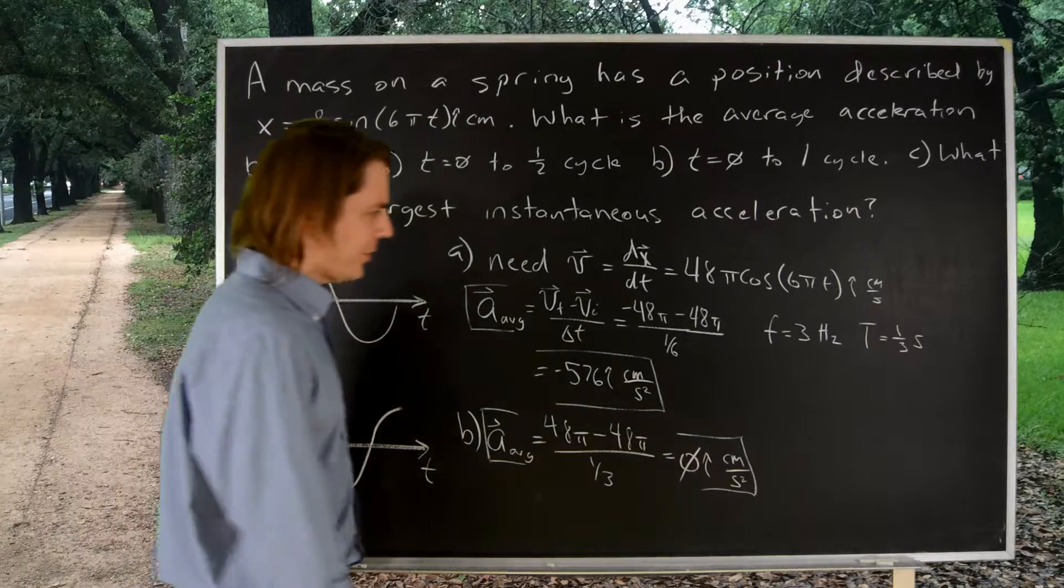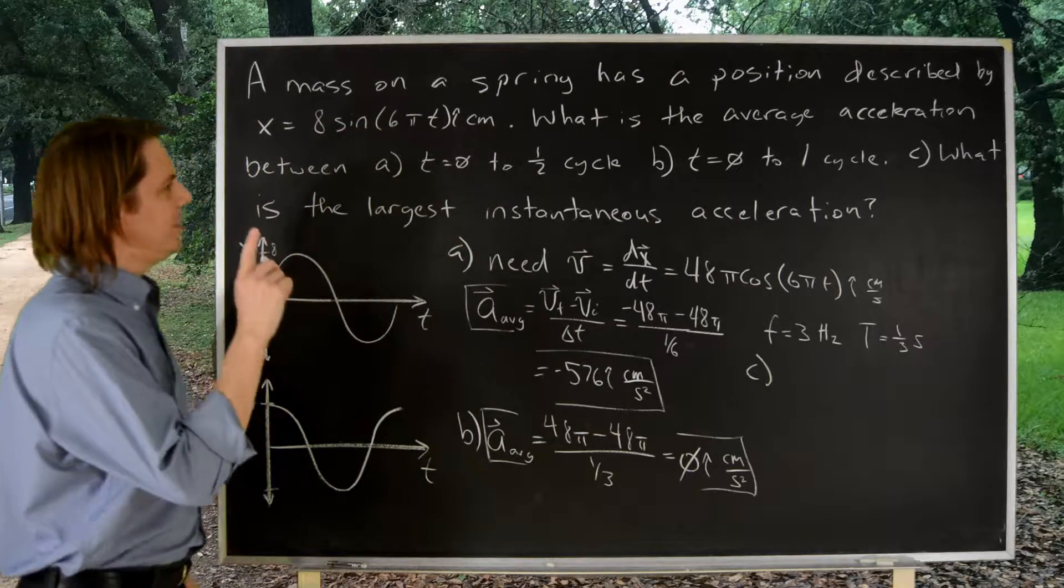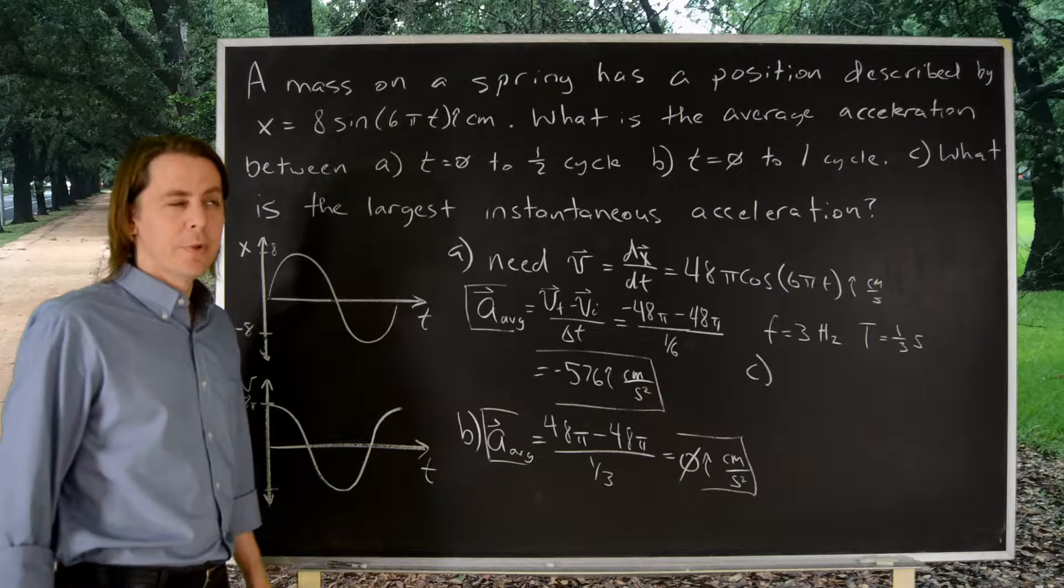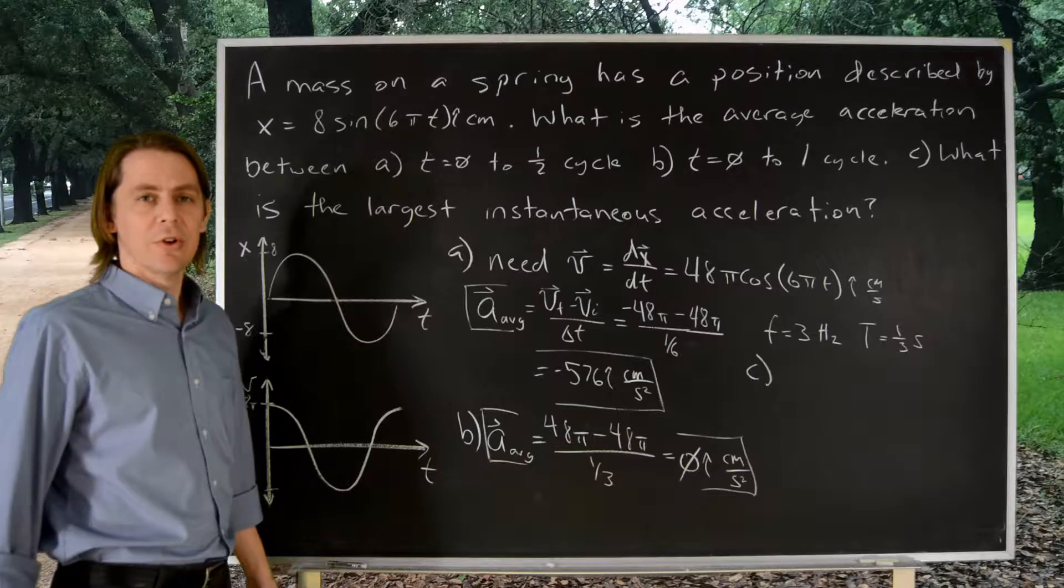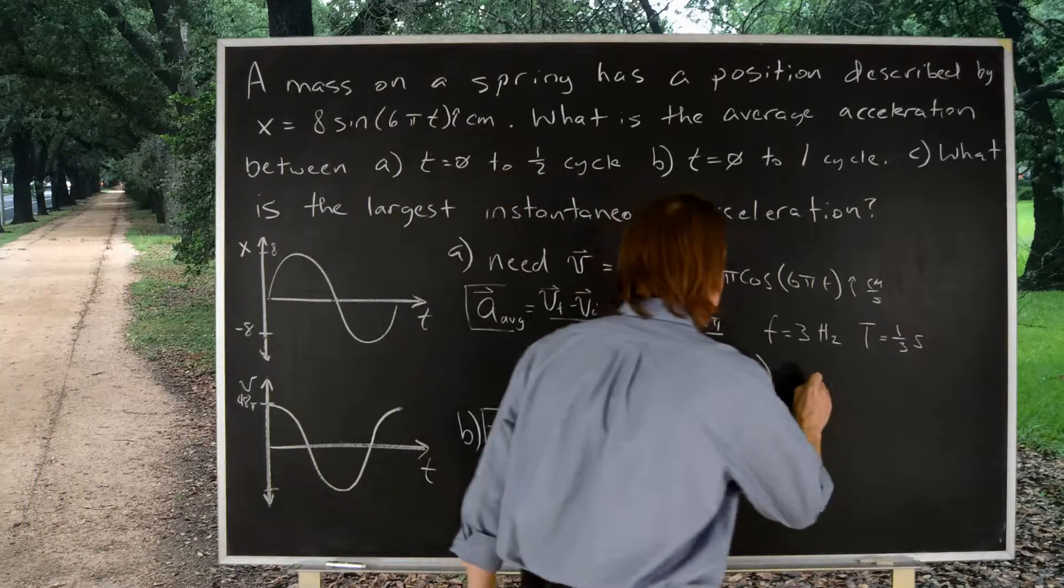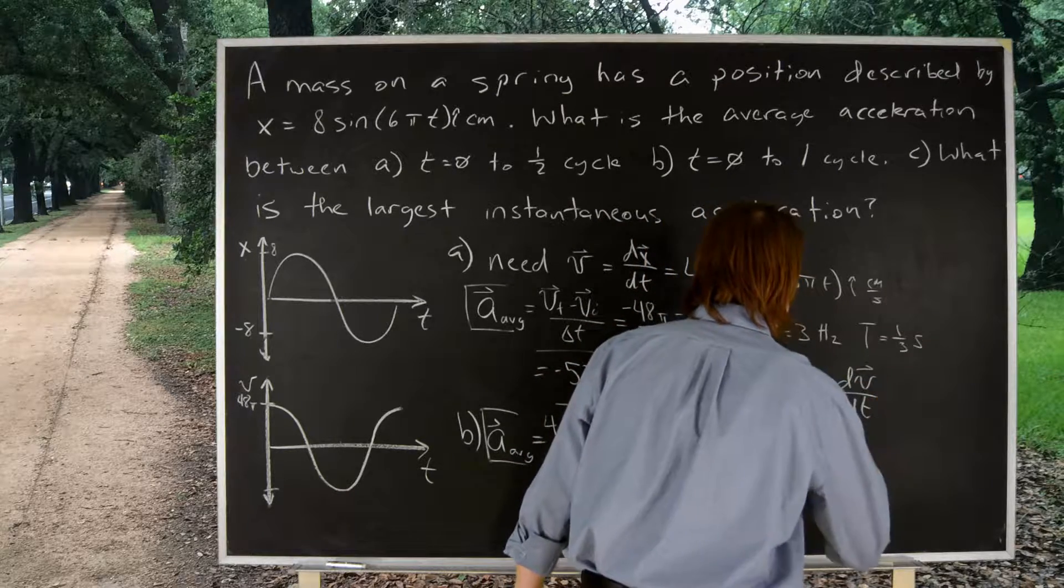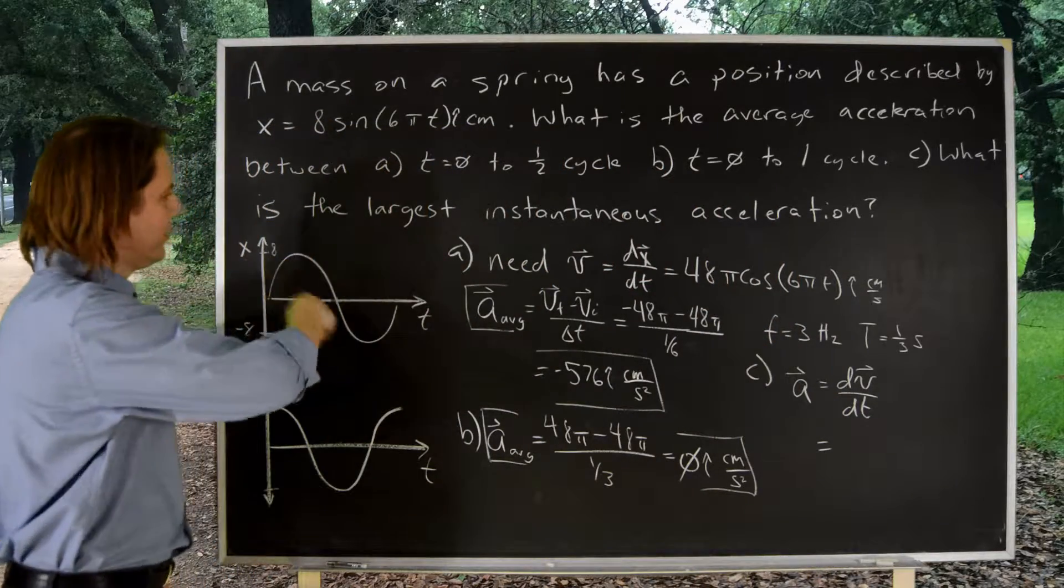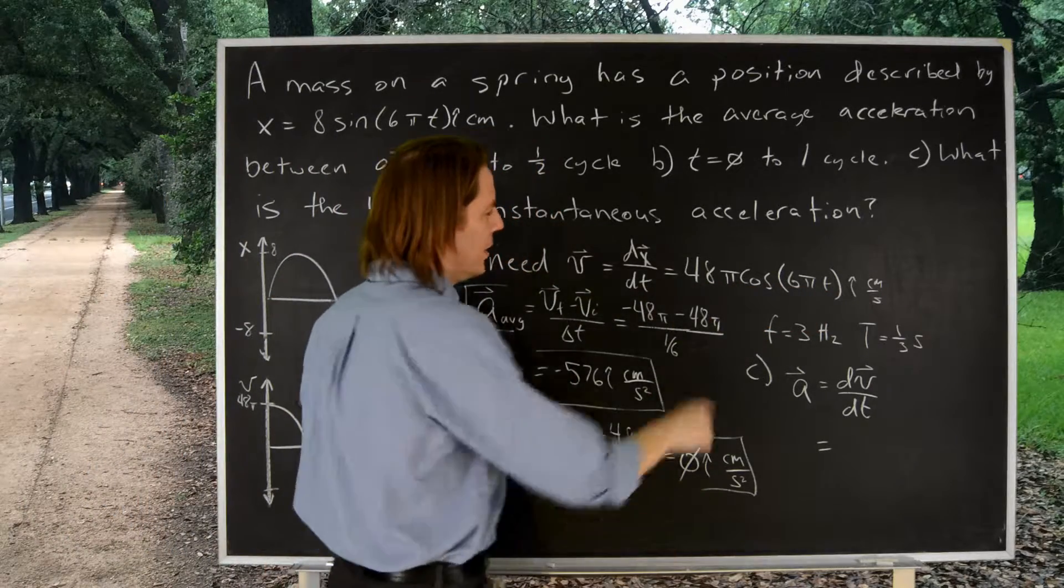Let's see if I can fit part C right here. What was part C? Part C asks for what is the largest instantaneous acceleration. Well, to get that, it'd probably be best to just write an expression for the instantaneous acceleration and try to figure it out. So, we know that A instantaneous is dV dT. So, we really just have to take another derivative. So, we want a derivative of the velocity expression.